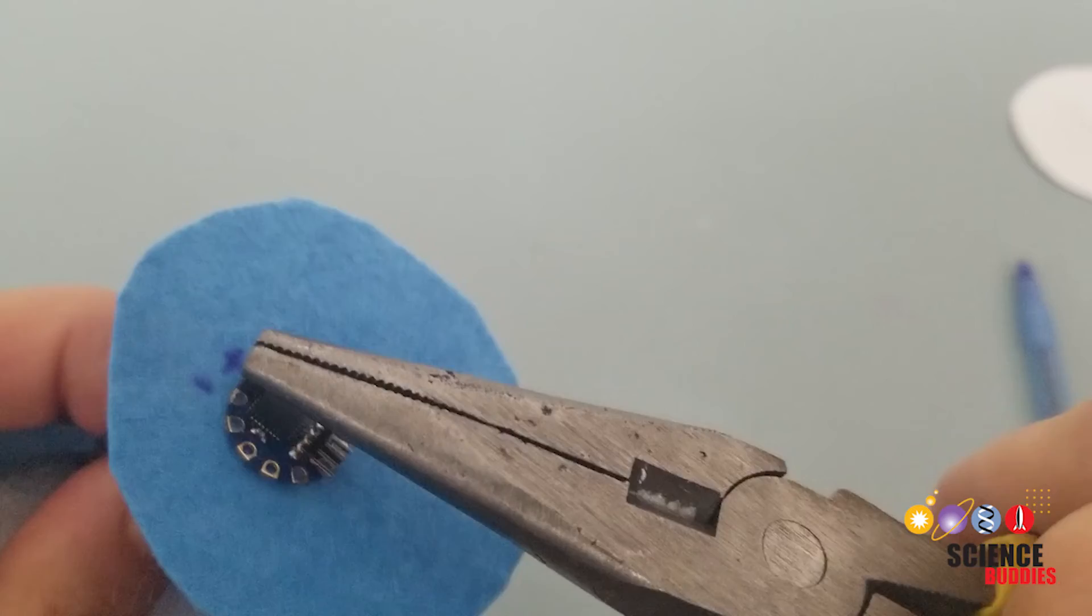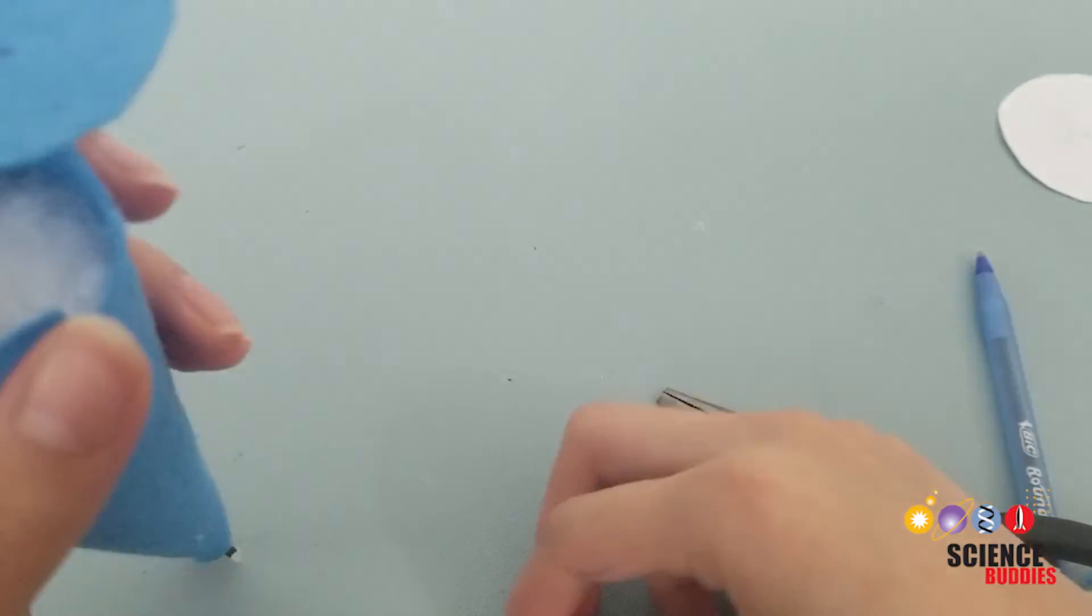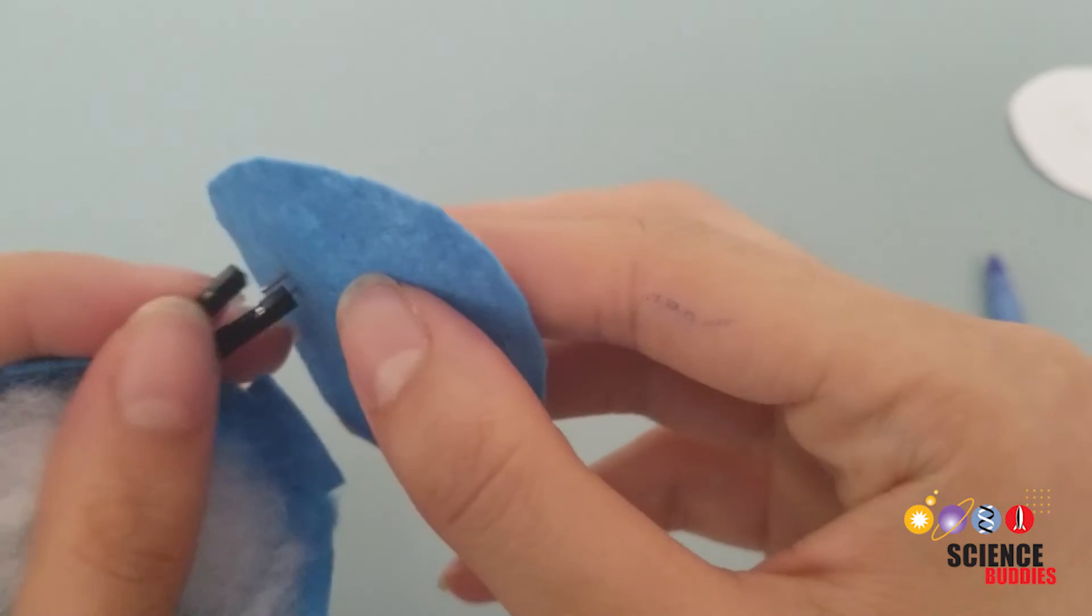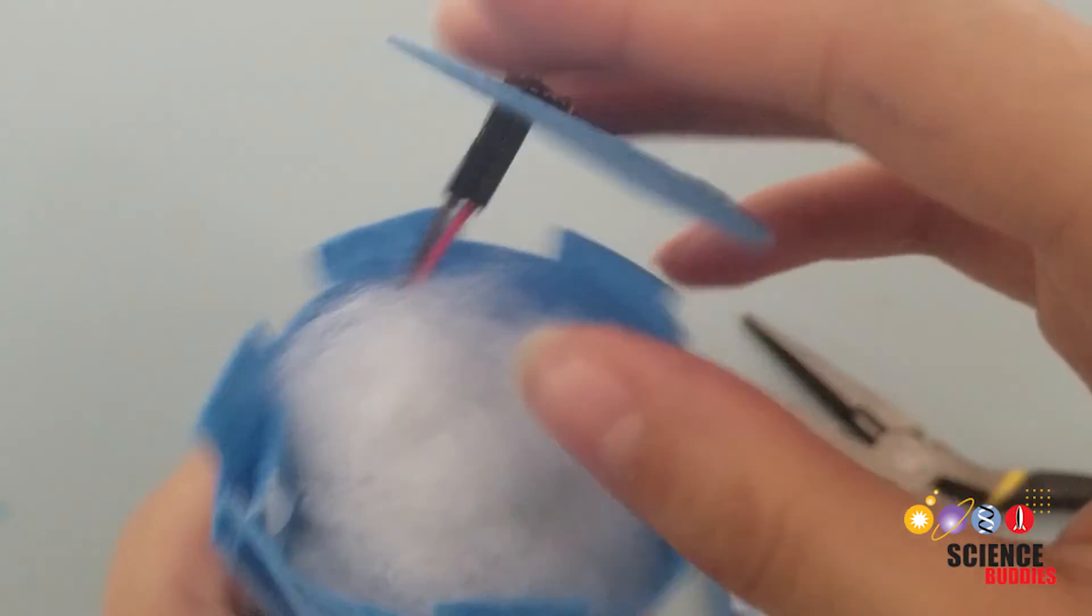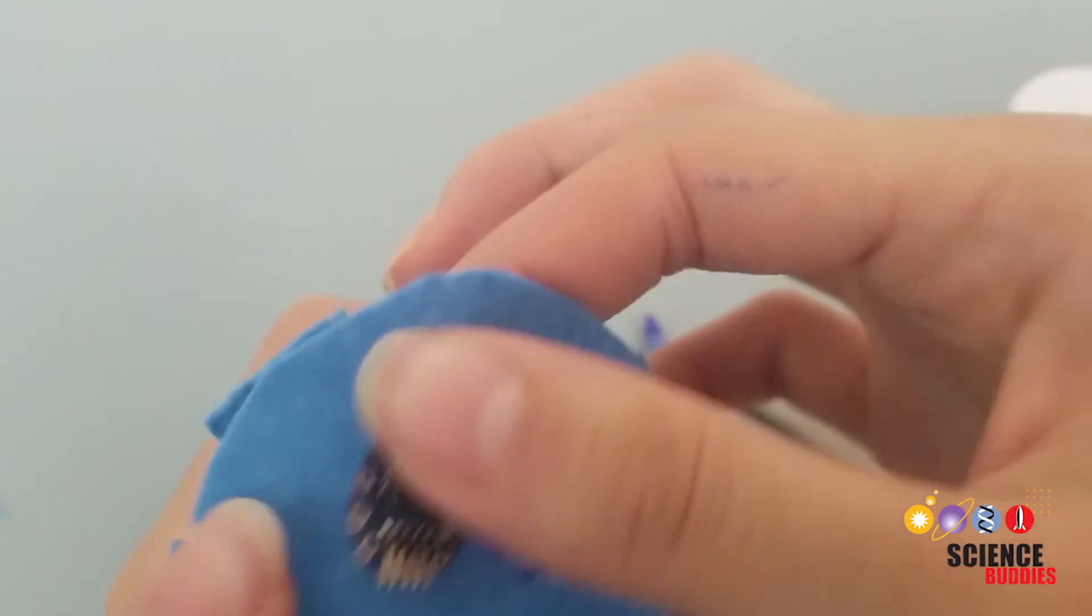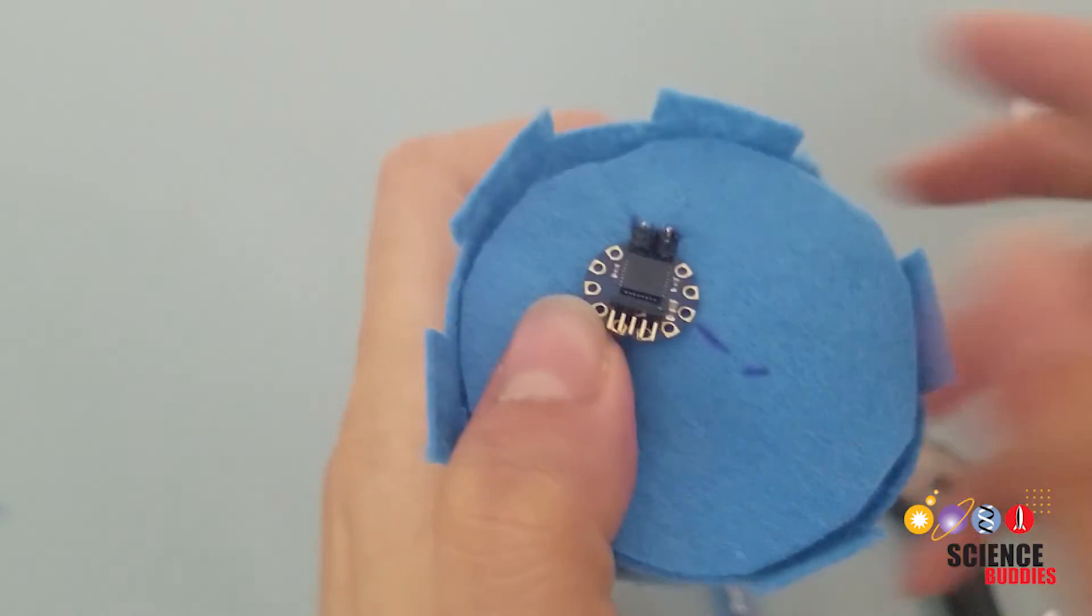You should have two male headers that go through. One goes through positive and one goes through negative. Then connect the female leads on the jumper wires to the long metal pieces that are through both the TinyLily mini processor as well as the felt. So these jumper wires are connected to the RGB LED, which is on the other side of the unicorn horn.